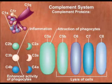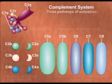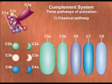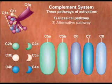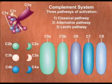Complement proteins are activated by a cascading mechanism. There are three pathways of complement activation: the classical pathway, the alternative pathway, and the lectin pathway. The classical and alternative pathways are demonstrated in this animation.